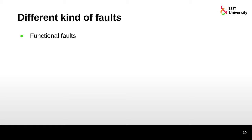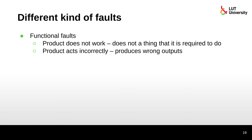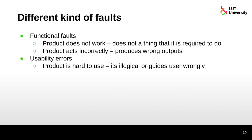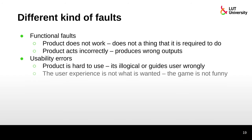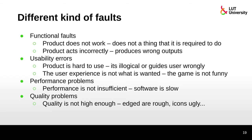There are different kinds of faults: functional faults mean the product does not do what it is required to do, or produces wrong outputs. Usability errors mean the product is hard to use, illogical, or guides the user wrongly — the user experience is not what is wanted, like a game not being fun. Performance problems mean performance is insufficient — software is slow. And there are quality problems: quality is not high enough, edges are rough, icons are ugly.